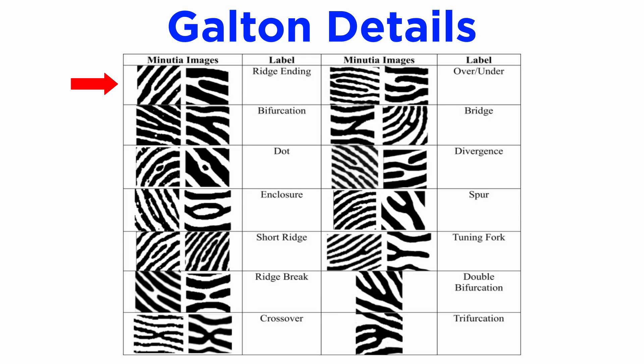Galton was the first to determine that the ridges of a fingerprint are not continuous. He theorized that the lack of continuity in ridges can be utilized to differentiate between two fingerprints of the same pattern by identifying the ridge details. To commemorate his contribution to fingerprint science, these details are known as Galton details.